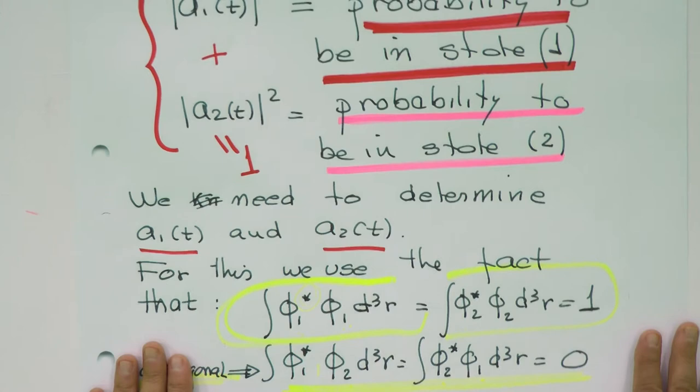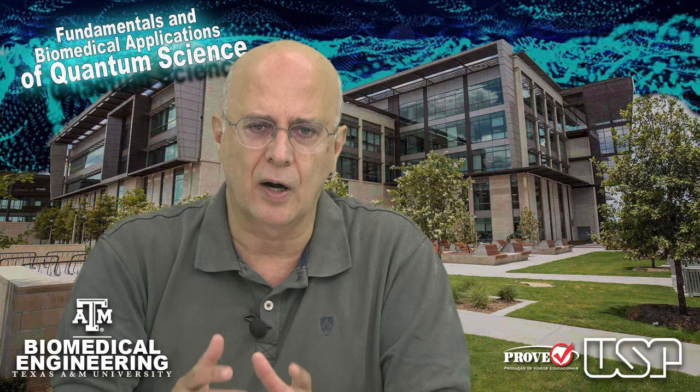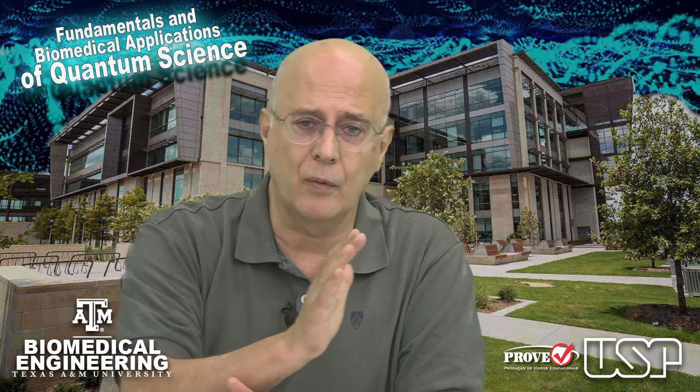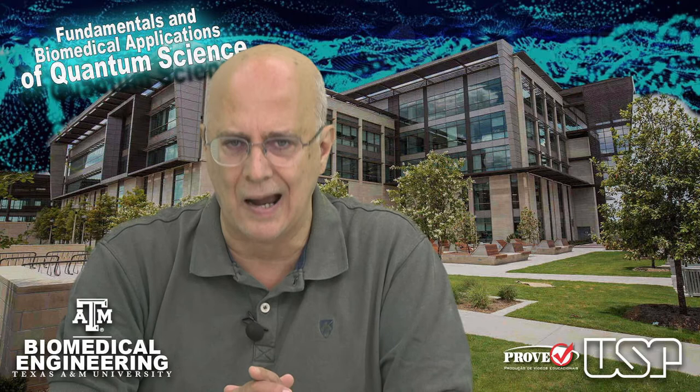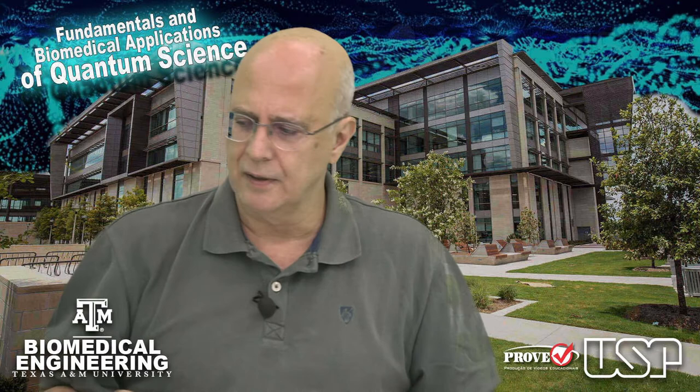We use those orthonormality properties and input them into the equation. With those properties plus the equation, we solve for A1 and A2 and get a time-variation equation for each coefficient. Those coefficients depend only on time, not on space. If we can get A1(t) and A2(t), we can understand what the radiation is doing for this two-level system. This is what we're going to do in the next lecture.